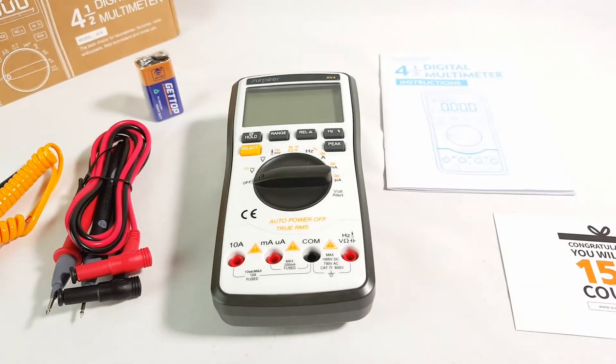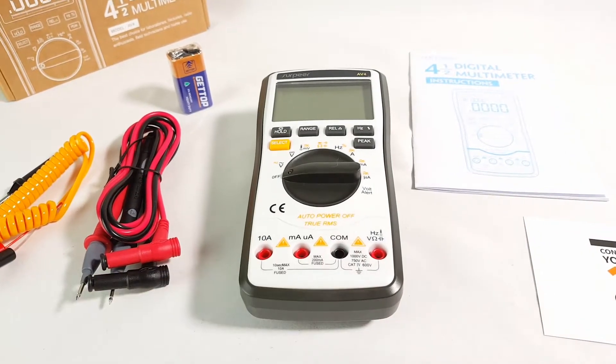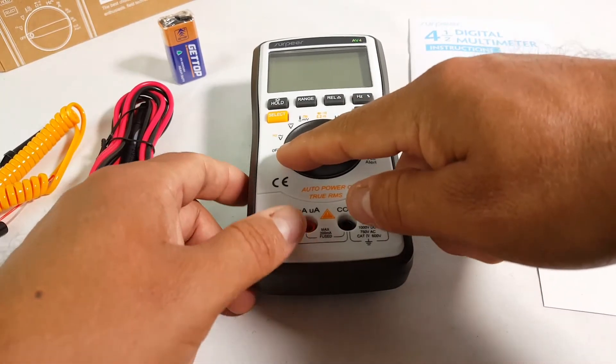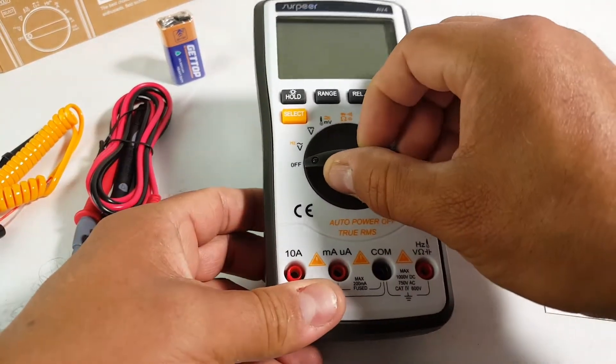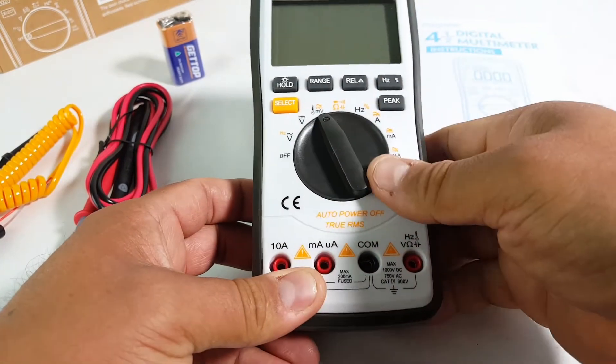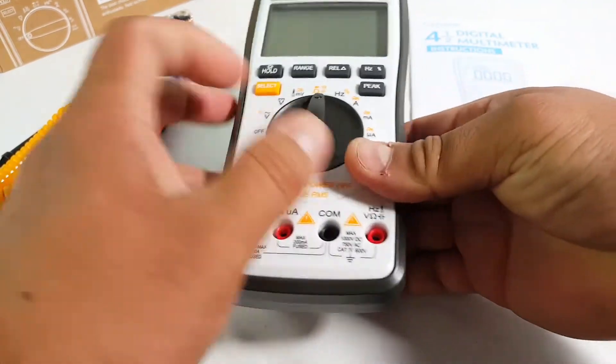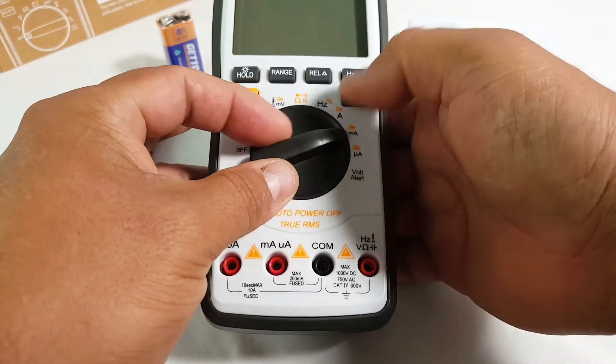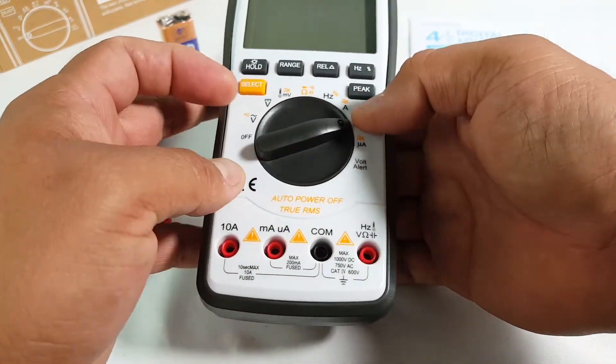So it has the auto power off feature. That way you save battery. You got the off button here, hertz, there's so much stuff here. And to change settings here, hold, select, peak.